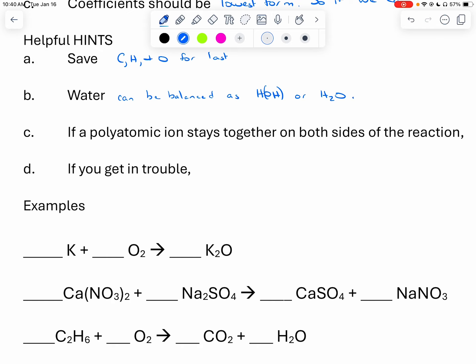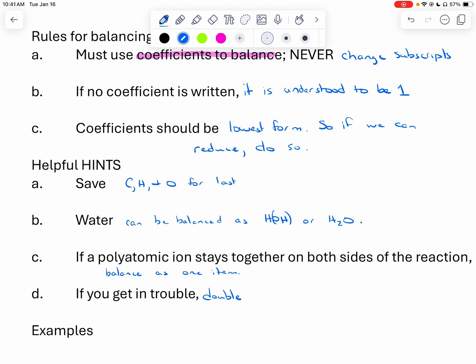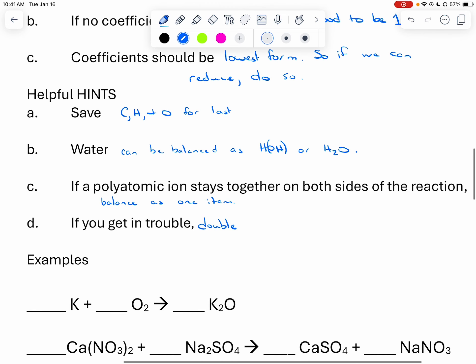This kind of goes with that one. If a polyatomic ion stays together on both sides of the reaction, we're going to balance it as one item. And we will see all of these in our examples that are upcoming. So if you don't really understand what one means, hold on a second. And then last but not least, if you get in trouble, we can always double because sometimes doubling helps us kind of get our balancing going. And you can always reduce it out to get back to our lowest common form.